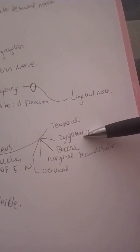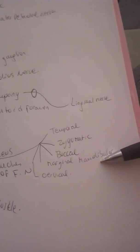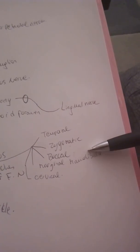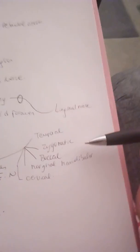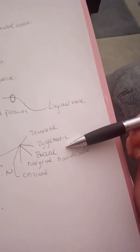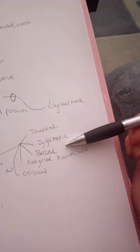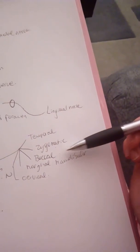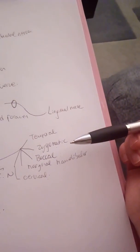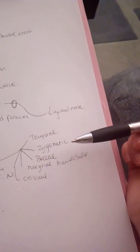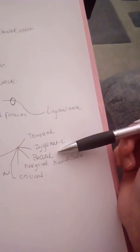The zygomatic branches will innervate the orbicularis oculi. The buccal branches will innervate the orbicularis oculi and oris, zygomaticus minor and major, procerus, nasalis, levator labii superioris alaeque nasi, levator labii superioris, levator anguli oris, and buccinator.